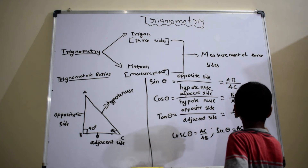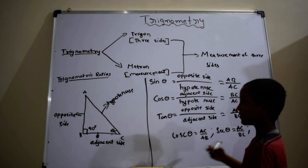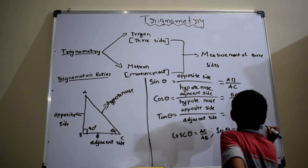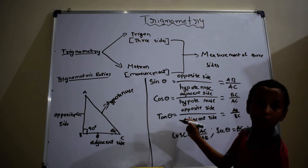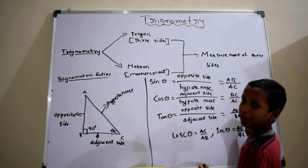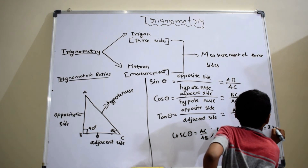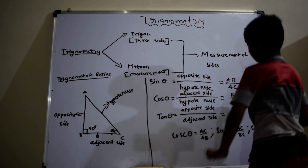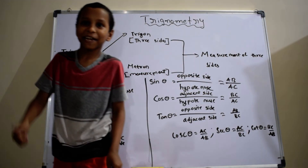The last ratio is cot theta, which is the reciprocal of tan theta, and it is equal to BC by AB. Thanks for watching.